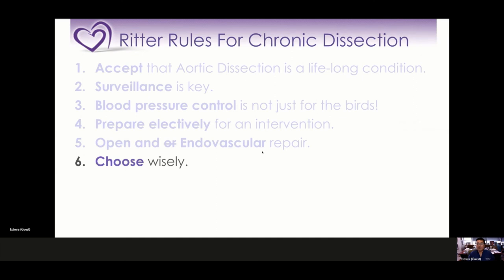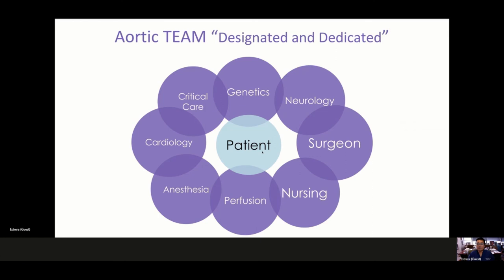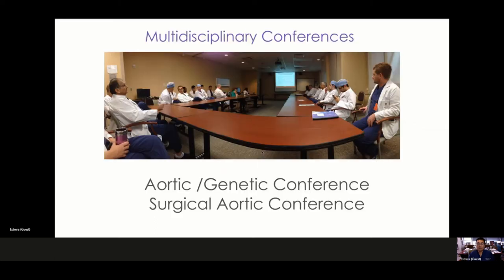Rule six: choose wisely. As a patient, it's important to understand your disease and own it. It's also important to make sure your aortic team is designated and dedicated to treating patients with aortic diseases, because what's most important is that the patient is at the center of care. My advice to patients is to make sure the group they seek medical attention from has a good multidisciplinary team approach. We hold monthly multidisciplinary conferences to discuss complex aortic management cases.